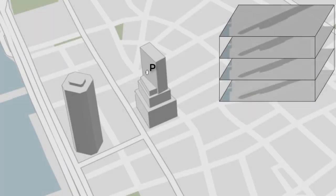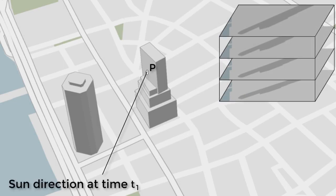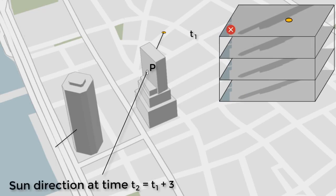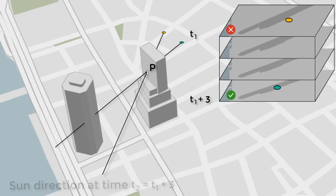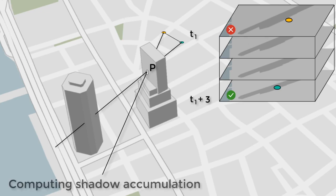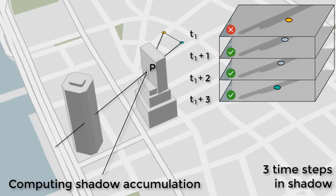Now consider a point P for which the shadow accumulation is to be computed. The start and end pixels on the shadow plane are identified by projecting the point at T1 and T2, and the location over different time steps is obtained by linear interpolation. The depth values at different time steps are then compared with the depth of the corresponding pixels, and then combined to obtain the accumulated shadow.